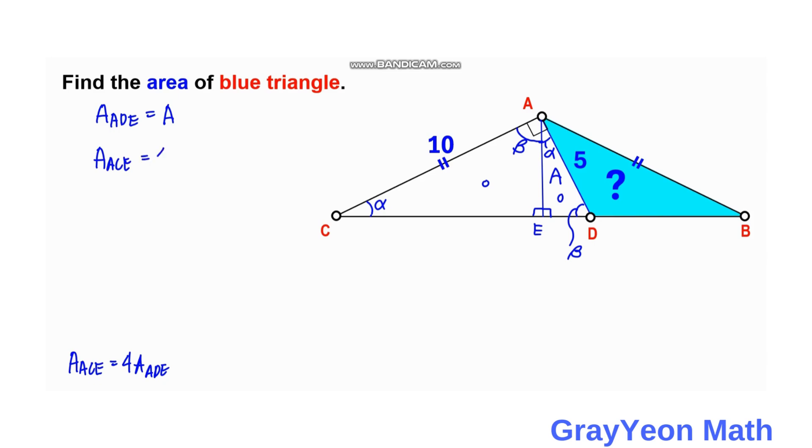Is equal to 4 times area of ADE. But we let area of ADE to be A, so 4A. So area of ACE will be 4A, so we can write here 4A.